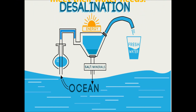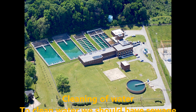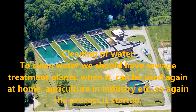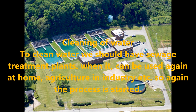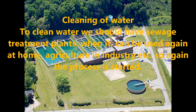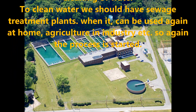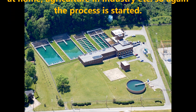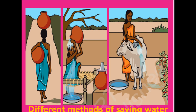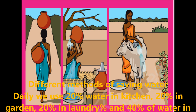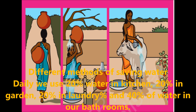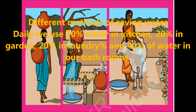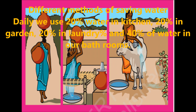Let us learn how we can clean water. To clean water we use sewage treatment plants, after which it can be used again at home, in agriculture, and in industry. The process is then repeated to clean the water for drinking and everyday use. Children, daily we use 20% of water in the kitchen, 20% in the garden, 20% in laundry, and 40% of water in our bathrooms.